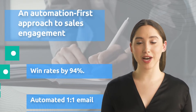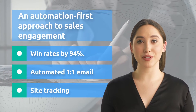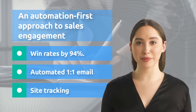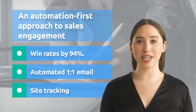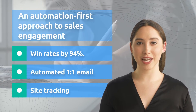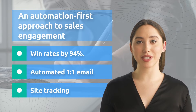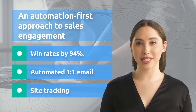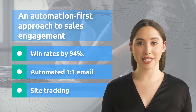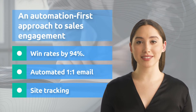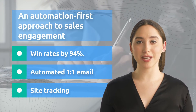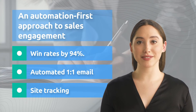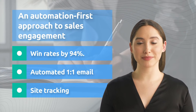An automation-first approach to sales engagement: sales engagement automation uses rich customer data from every sales and marketing touchpoint to know the right time and channel to automate unique and timely messages. It also determines when providing a human touch will be most effective to close sales.